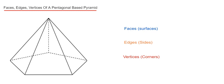So let's do the faces first. These are the surfaces which make the 3D shape. We have one face at the bottom and then we have five triangular faces around the middle of the pyramid. That's a total of six faces.